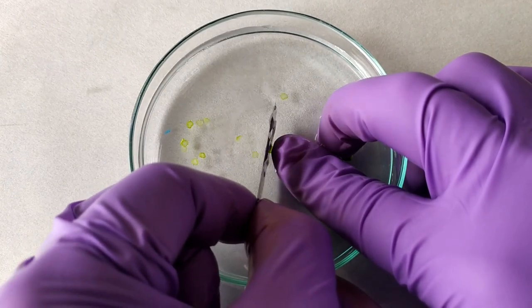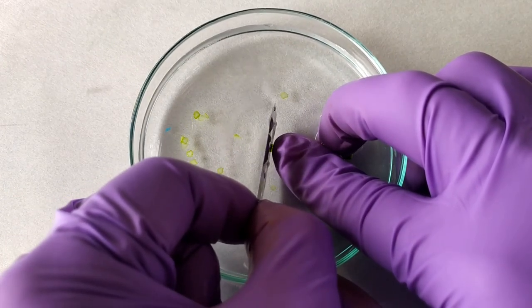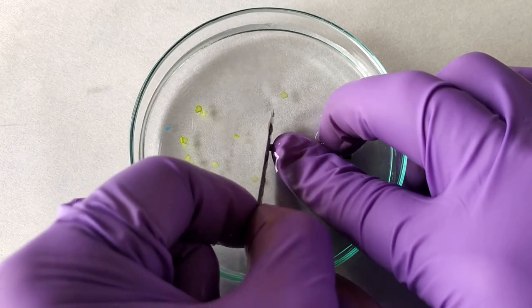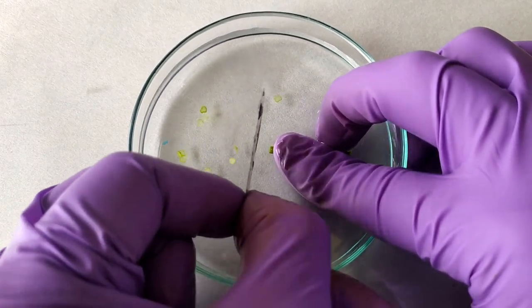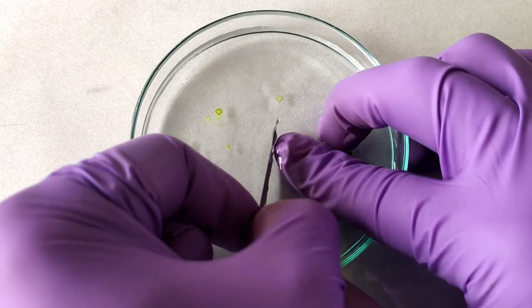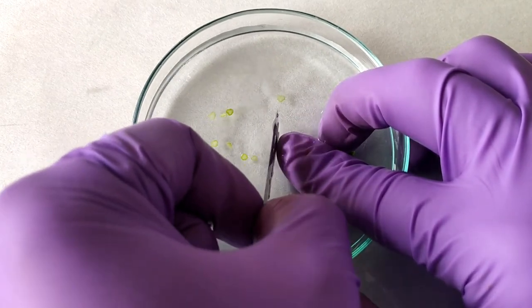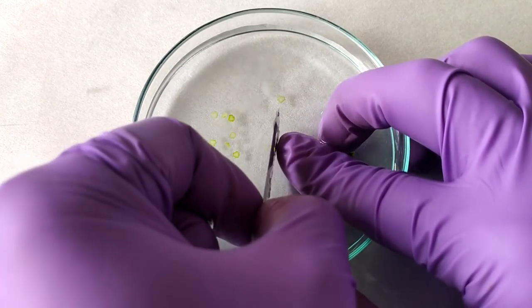One advantage of the underwater petri dish method is that the plant material maintains its osmotic turgidity throughout the duration of the cutting, especially at the freshly cut end of the material. This makes the slicing much easier and produces clean cuts.